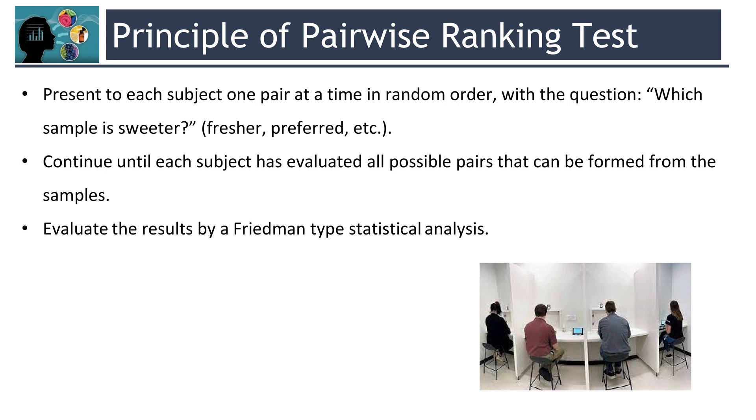When you are doing Pairwise Ranking Test, present to each subject one pair at a time in random order with the question, which sample is sweeter or fresher or preferred. And continue until each subject has evaluated all possible pairs that can be formed from the samples, and evaluate the results by a Friedman type statistical analysis.